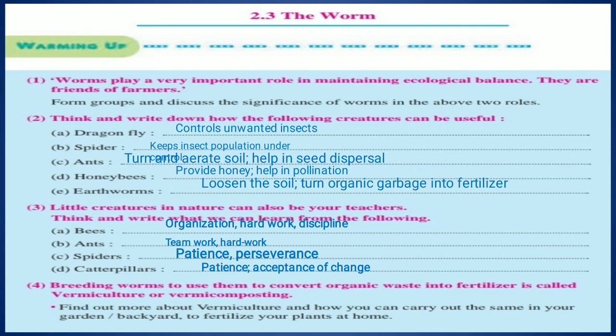The fourth warming up question: breeding worms to use them to convert organic waste into fertilizer is called vermiculture or vermicomposting. These are scientific terms — you can ask your science teacher about them. Without wasting more time, let me start the first stanza of the poem.